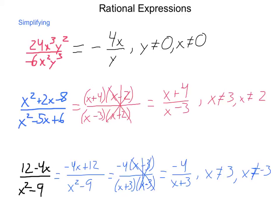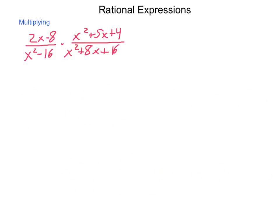Now, for restrictions, x cannot be 3 and x cannot equal negative 3. Anything else is a valid value for x. It just cannot have these ones because it would have made the original denominator 0. So, as we move along, next we're going to see how we can multiply.